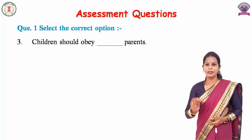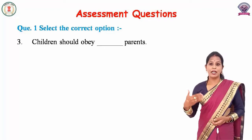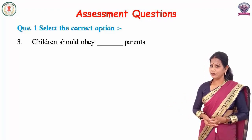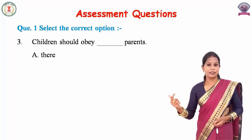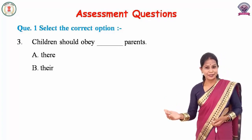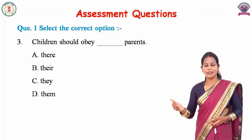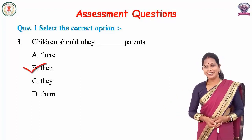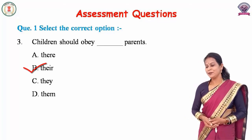The third one: 'Children should obey ___ parents.' Children को obey means आज्ञा मानने चाहिए अपने parents की. The options are A. There (T-H-E-R-E), B. Their (T-H-E-I-R), C. They (T-H-E-Y), D. Them (T-H-E-M). And the correct answer is B — Their. Children should obey their parents.